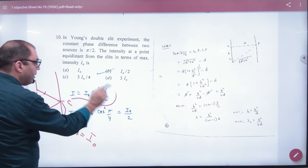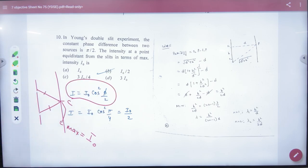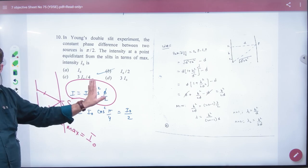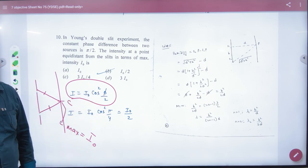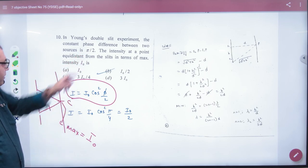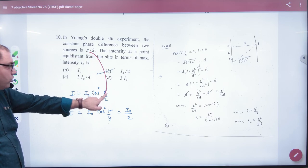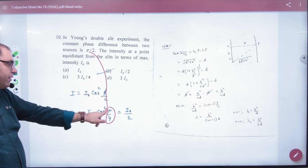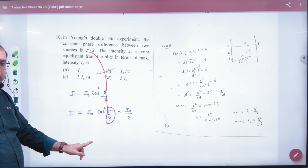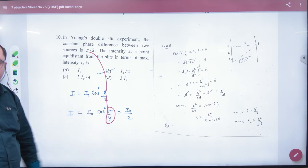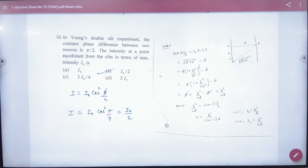The formula becomes I₀ cos² φ/2. What is φ at the center point? If φ is 0, what will be the answer? I₀. But what is φ given? π/2. So you put this π/2 here. π/2 divided by 2 equals π/4. π/4 is 45 degrees. Cos 45 is 1/√2. 1/√2 squared is half. So what is the answer at this point? Clear.